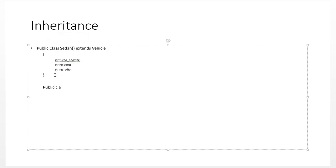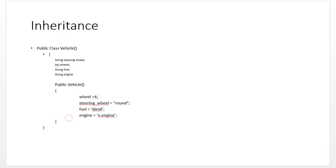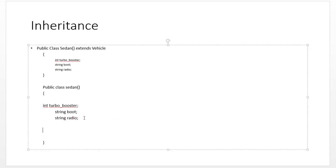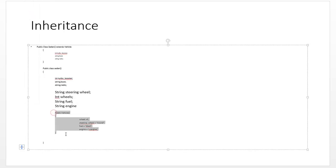Writing the Sedan class with inheritance is similar to writing it by copying everything from the Vehicle class directly into the Sedan class — taking all those variables and pasting them in there.